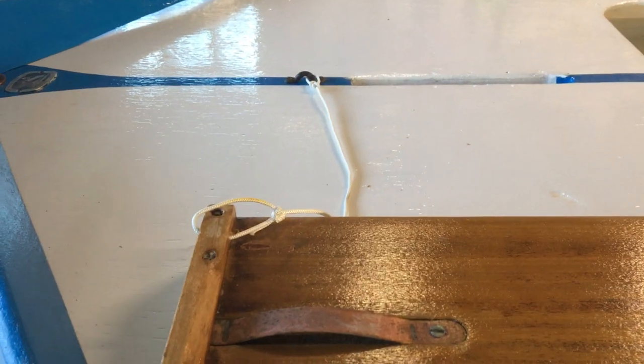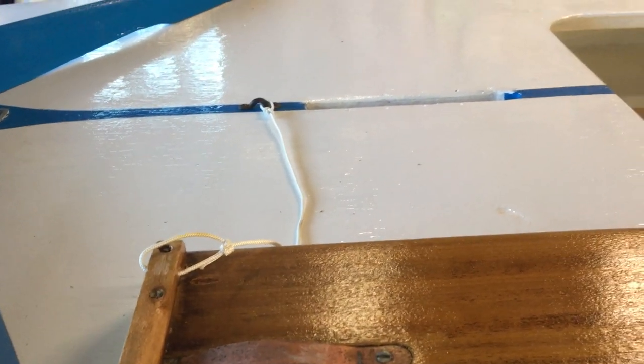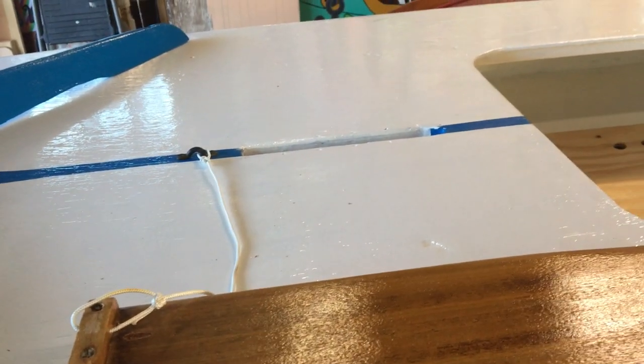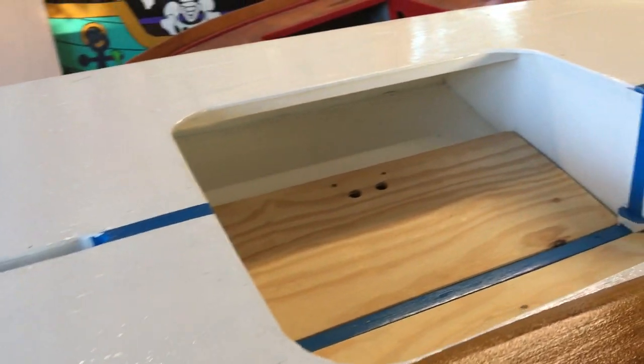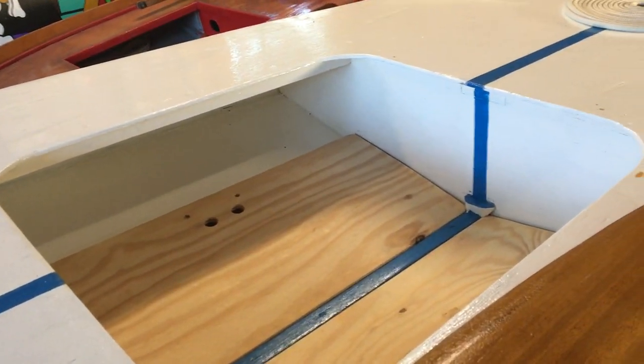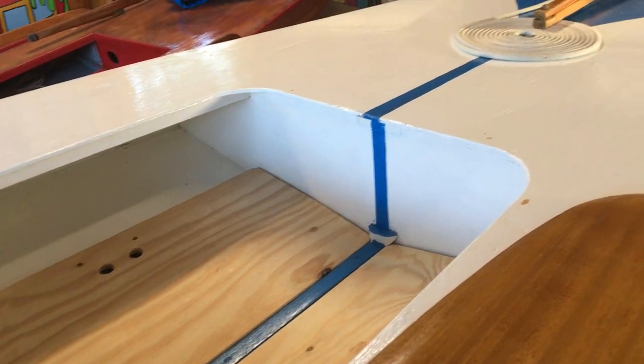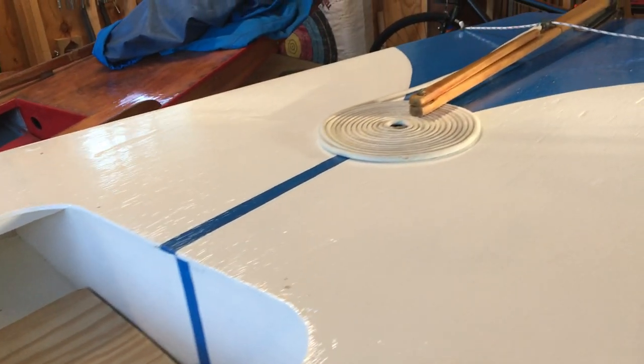Put on a retaining line for the dagger board. That's pretty important to have something, a bungee, a line, whatever, so if you capsize your dagger board doesn't go floating off. That's an important part of the recovery process.